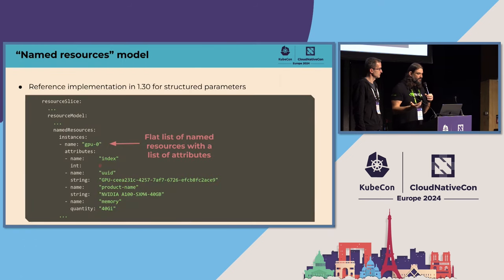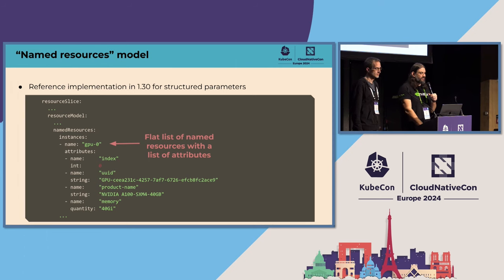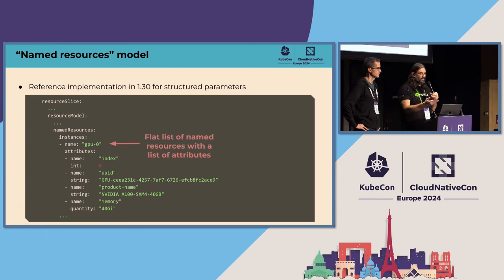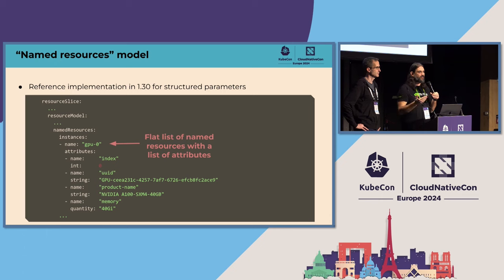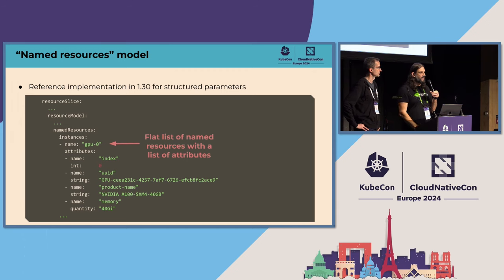In 1.30, for this built-in model, we came up with a reference implementation called named resources. If you're familiar with the existing device plugin API, it allows you to advertise a list of opaque strings back to the Kubelet representing resources you might allocate. For GPUs, you might advertise eight GPUs with opaque strings GPU 0 through 7. The Kubelet tracks those strings and writes a simple count into the node object. The scheduler makes all scheduling decisions based on that count. In this built-in resource model for DRA, we're doing the same thing — except instead of passing back just a string, we pass back a name and a set of attributes attached to it.